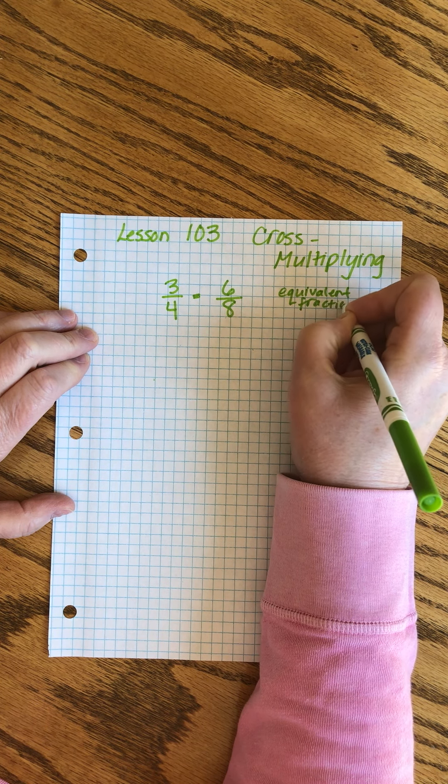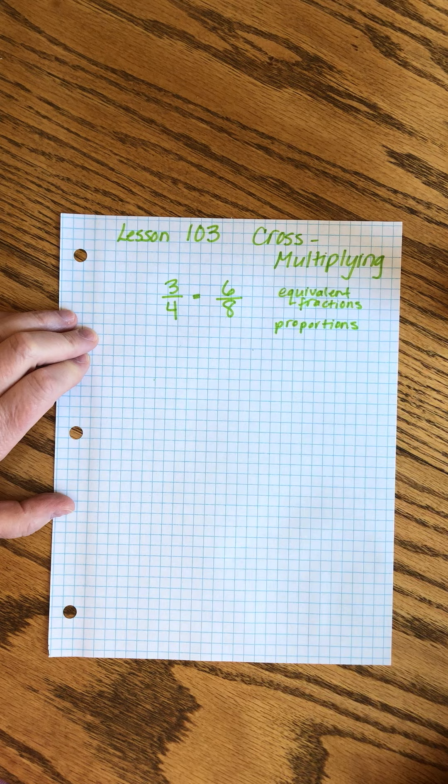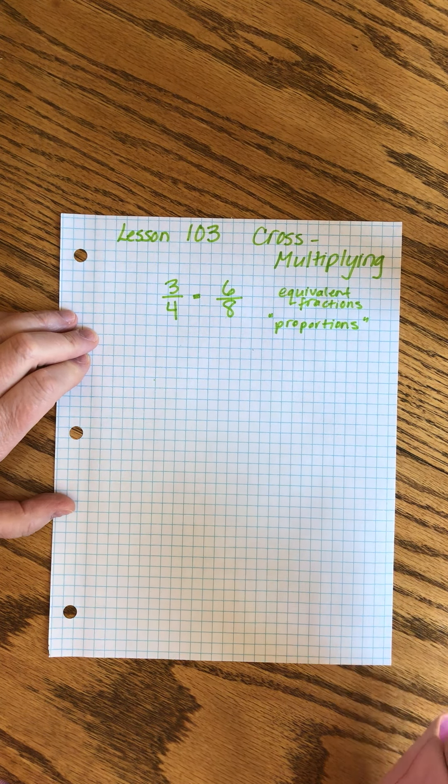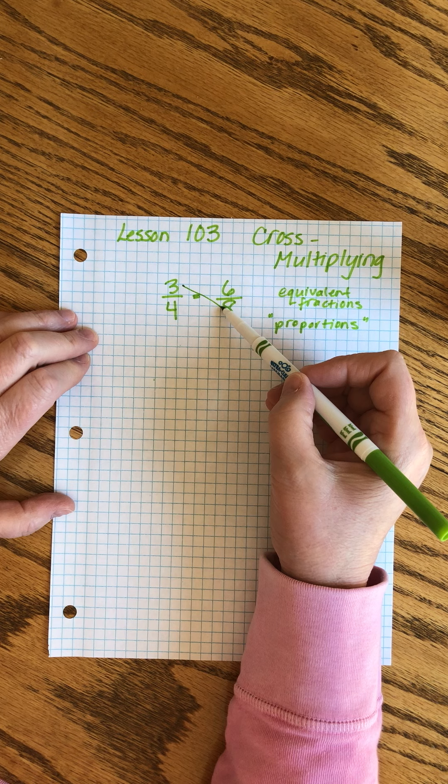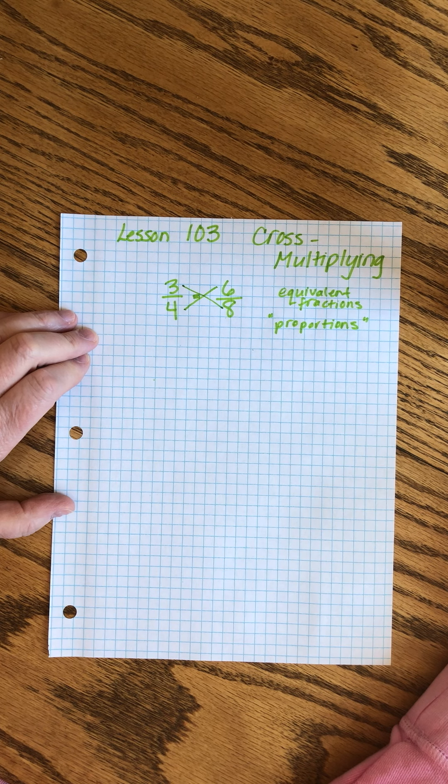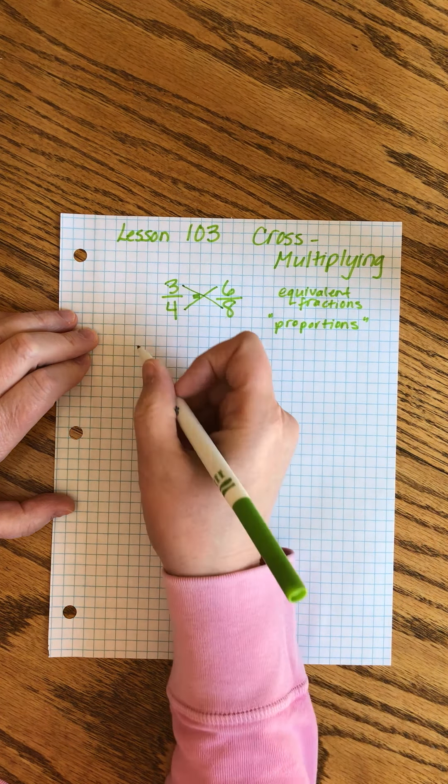So these are equivalent fractions, and the fancy name for that is proportions. It's just a fancy name that means there are two ways of saying the same thing. Here's a cool thing about them: if you multiply the top of one fraction times the bottom of the other and compare it to the answer if you multiply the opposite two sides, they'll always be equal. It's really cool. 3 times 8, we're saying should be equal to 4 times 6. 3 times 8 is 24, 4 times 6 is 24. It always works out.